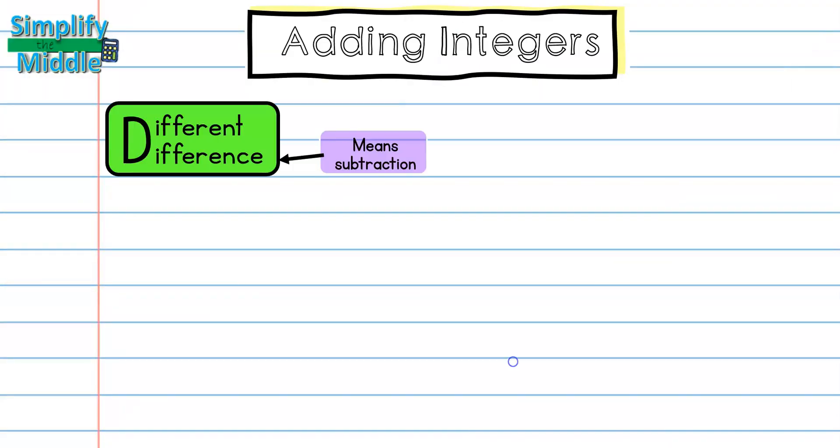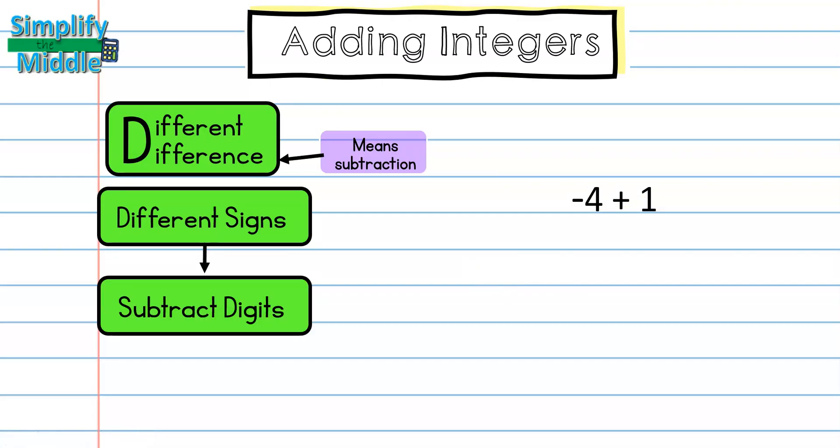Let's do an example this time with different signs. We know that different signs means we're going to be subtracting. So, here we have negative 4 plus positive 1. This is negative, this is positive, so we have different signs.